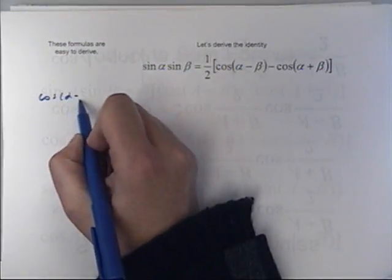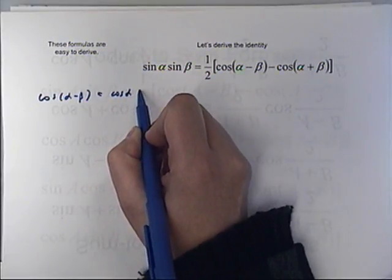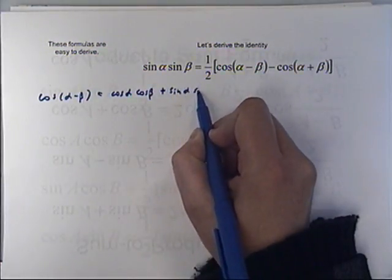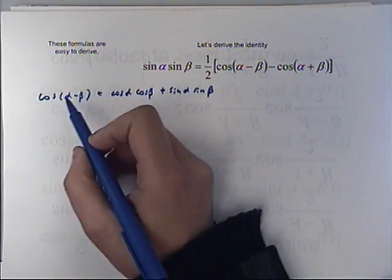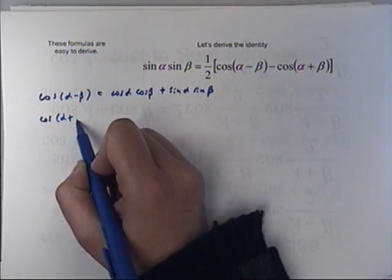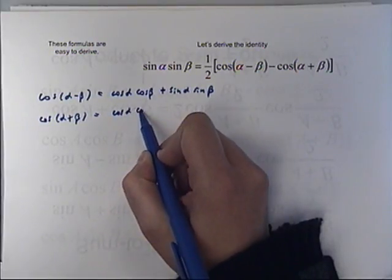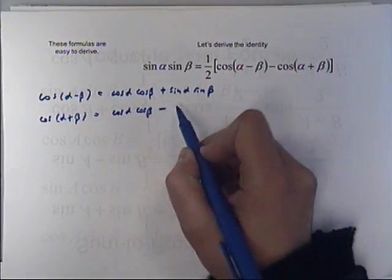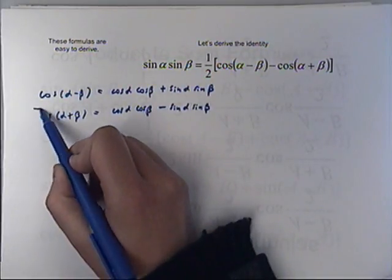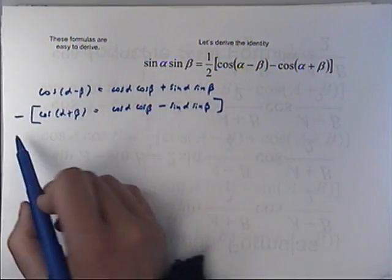So if I have the cosine of alpha minus beta, that equals cosine alpha times cosine beta plus sine alpha times sine beta. And then I also write down the cosine of alpha plus beta — this is just another formula off of that sheet — equals cosine alpha times cosine beta minus sine alpha times sine beta. What I'm going to do is subtract the bottom one from the top one.